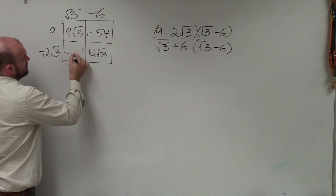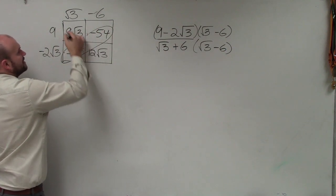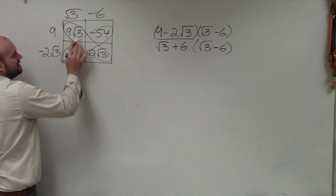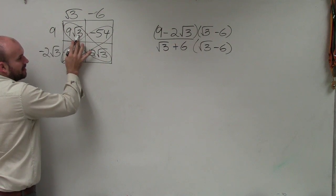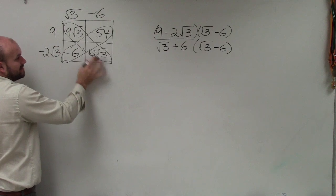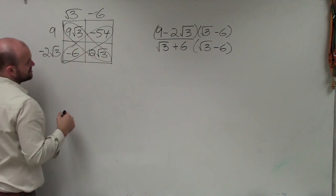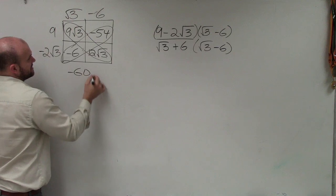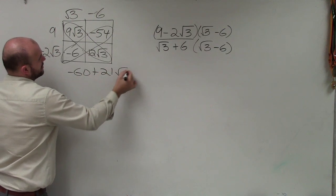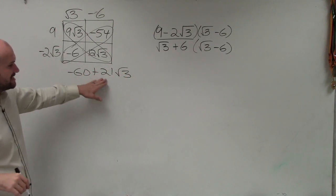Now we can see, the nice thing about this is we can organize them. These have the same number under the radical sign. Our radicands are the same, so we can combine them. And these are both numbers, so we can combine them. Therefore, I have negative 60 plus 21 square root of 3. That's my numerator.